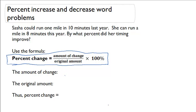Let's first calculate the change. She started off at ten. She dropped down to eight minutes. So her change was two minutes. Now her original amount again was ten minutes.